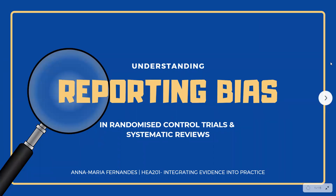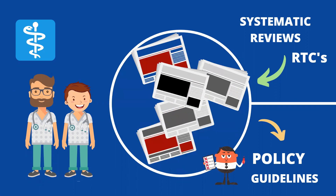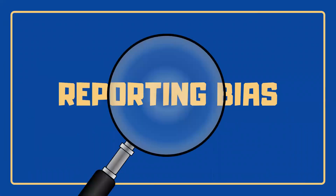Understanding reporting bias. Randomised control trials and systematic reviews are used by both clinicians and policy makers to make decisions about the treatment or prevention of health problems and to develop evidence-based guidelines in public health. Evidence-based medicine is the cornerstone of clinical practice, but it's dependent on the quality of evidence upon which it's based. Today, we'll focus our attention on reporting bias, which is a threat to the validity and quality of evidence, and we'll take a look at its impacts.